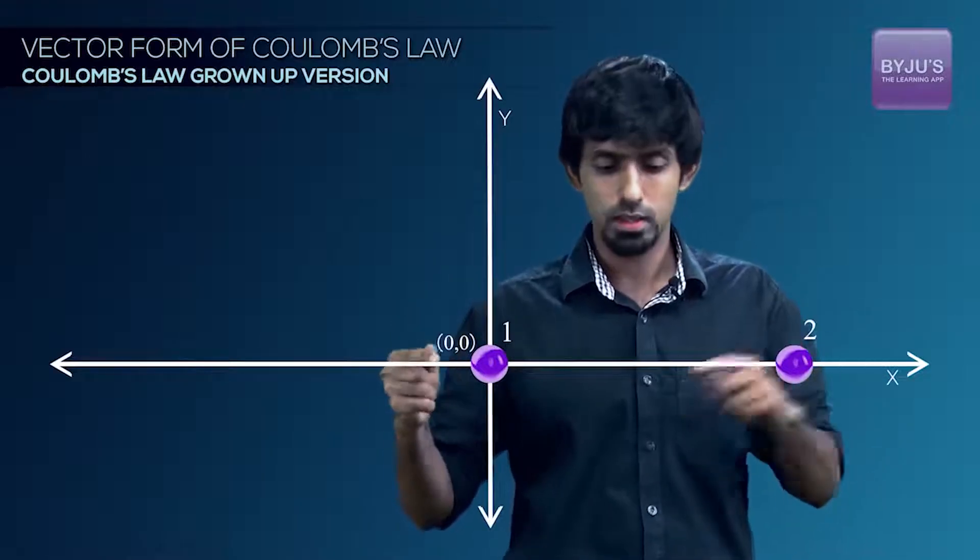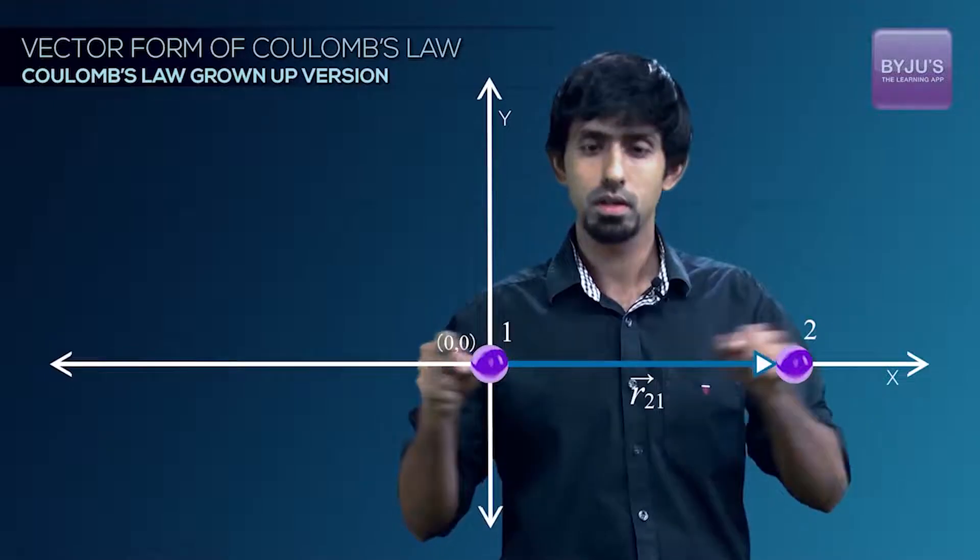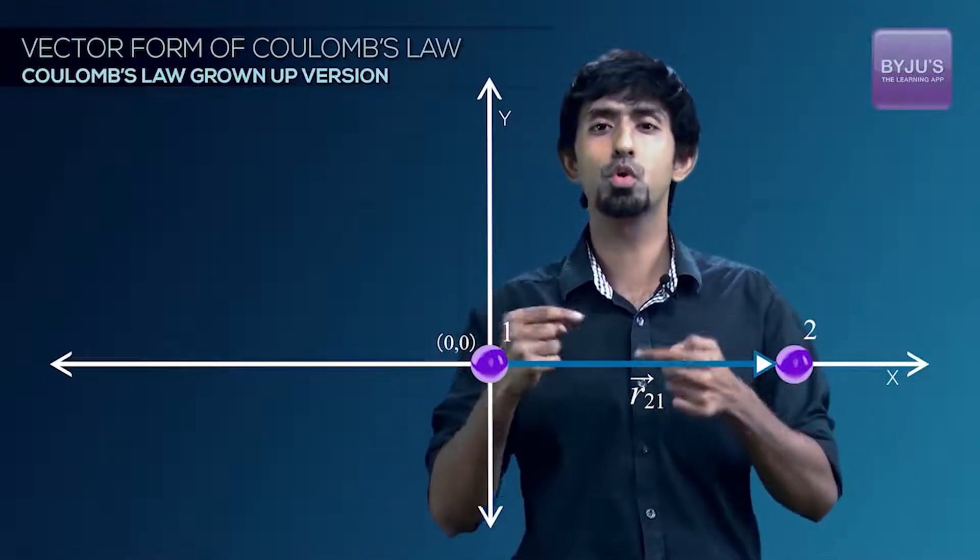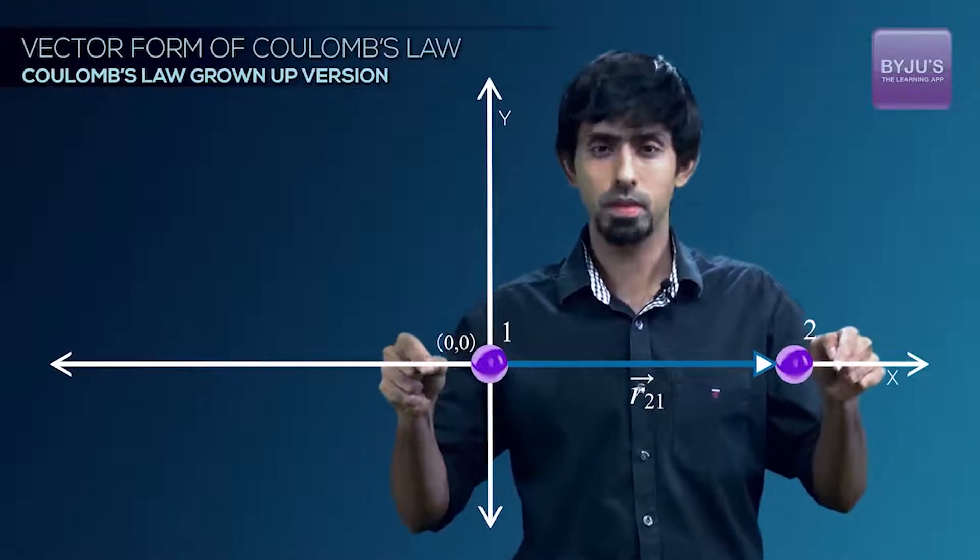If you've done this, then the position vector of 2 is going to be that line. Let's call it R21, which is basically the distance between charge 2 and charge 1. So R21 vector.